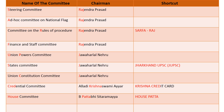The shortcut to remember these four committees is 'Surfaraj'. S from Steering Committee, A from Ad-Hoc Committee, R from Committee on the Rules of Procedure, and F from Finance and Staff Committee. I have highlighted these letters, and RAJ represents Rajendra Prasad. So, Surfaraj is the shortcut to remember these four committees.